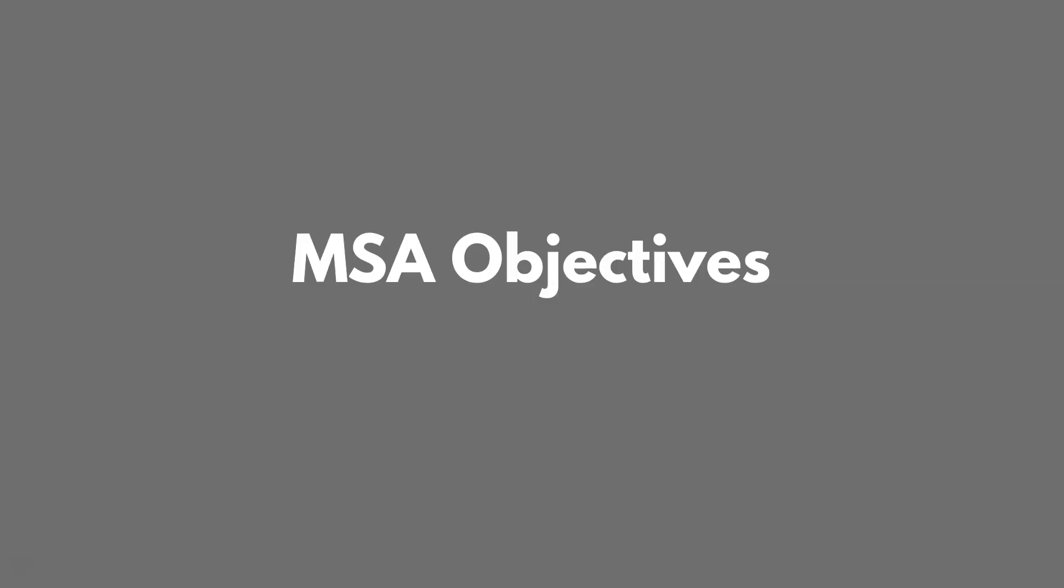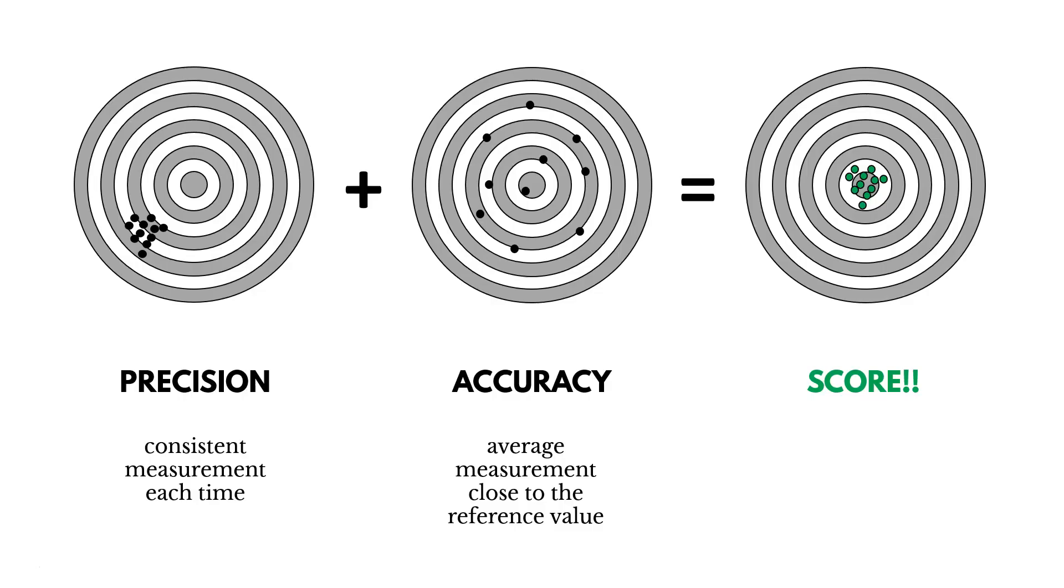Now, we have a few objectives of MSA as we carry this out. We want precision to get a consistent measurement each time. And then we want accuracy, the average measurement to be close to the reference value. And the way to think about this is visually looking at a target. So precision is you've got all the points clustered together, even if it's maybe not close to the reference value.